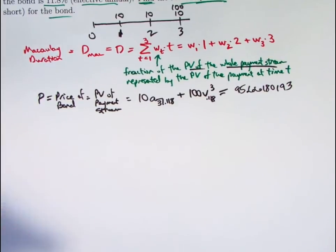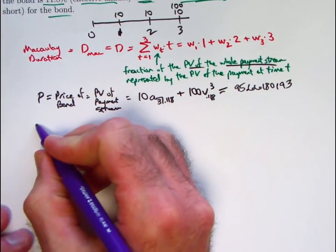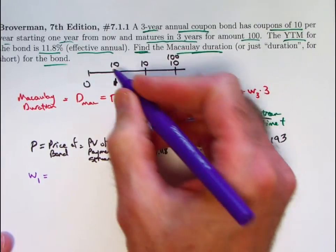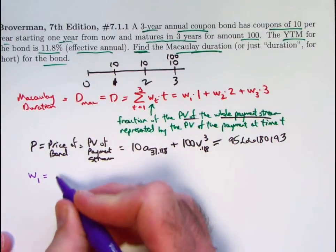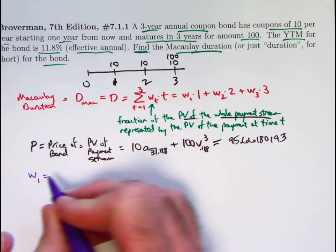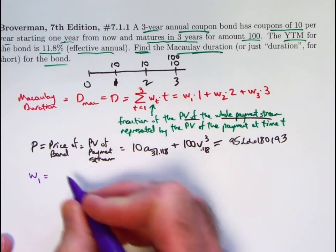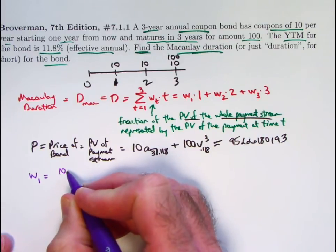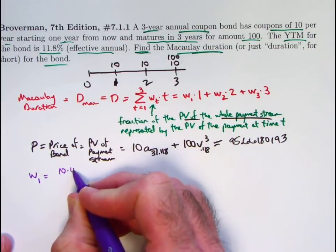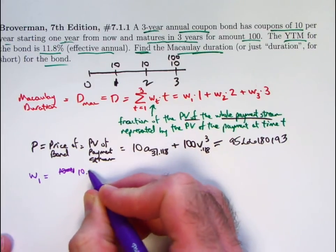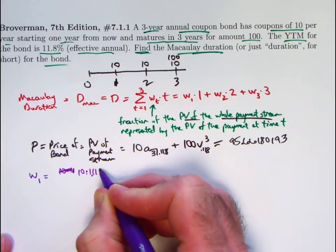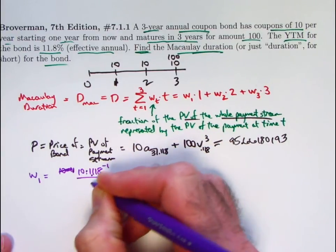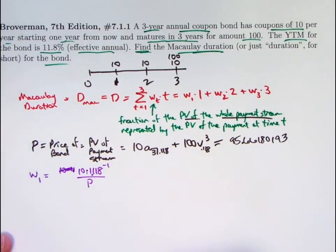All right. What are the weights now? W1 is going to be the present value of the payment at time 1. The numerator, then, is going to be, well, okay, relative to the price. The numerator is going to be the present value of that, so I take 10 times V, 10 times 1.118, having trouble here, to the negative 1 power. Divide that by P. Okay, the numerator is the present value of that payment at time 0.